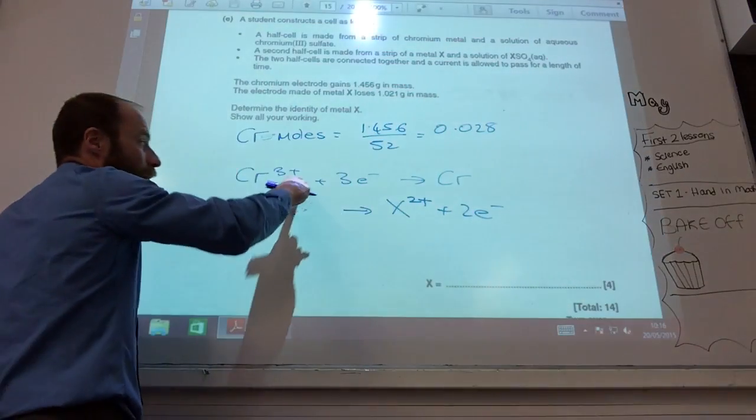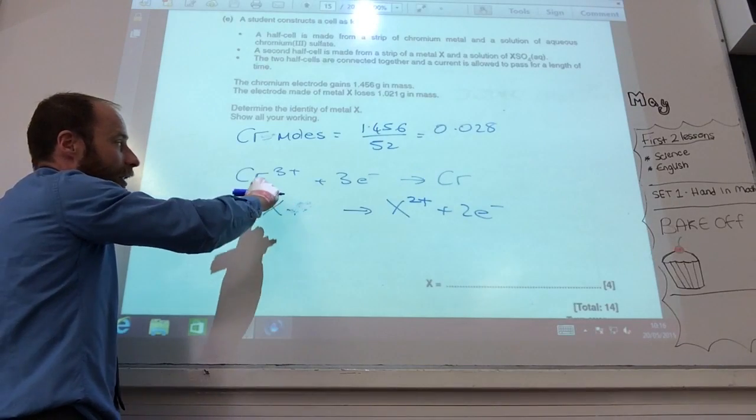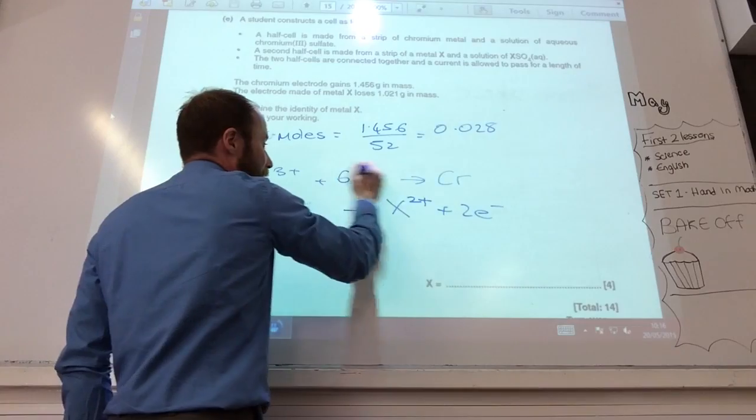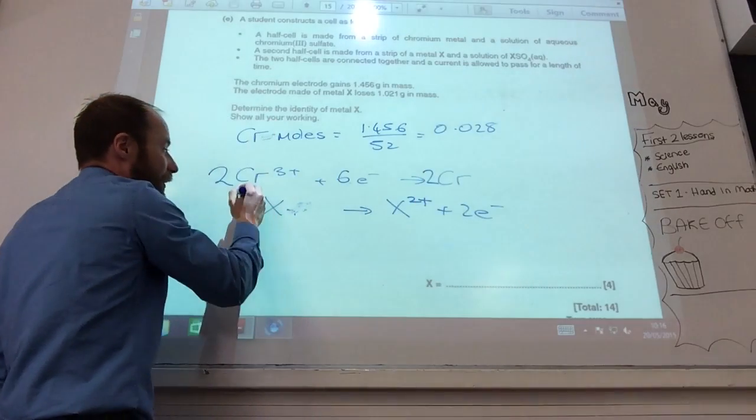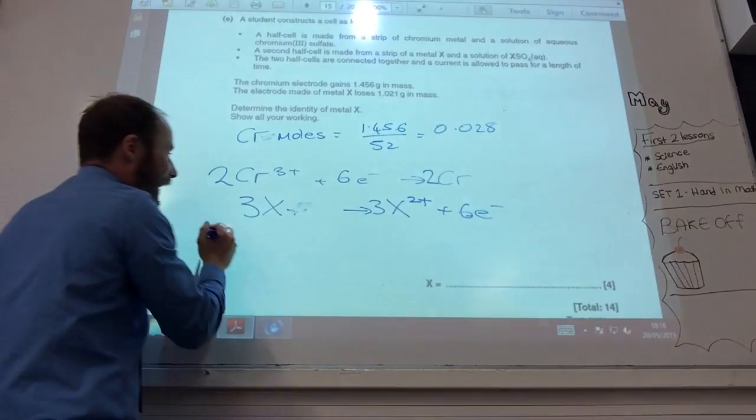I've got 3 electrons here and 2 electrons here, so I need to balance it. If I times this by 2, that becomes 2, that becomes 6, and that becomes 2. Times this one by 3, 3, 6. I add them together.